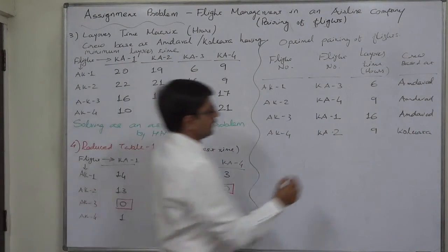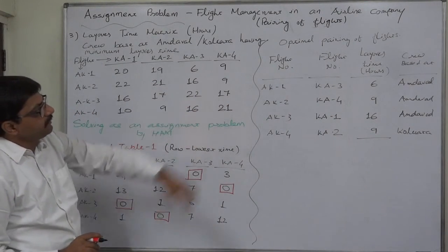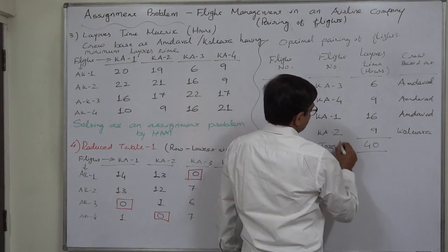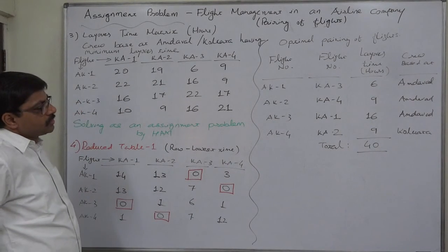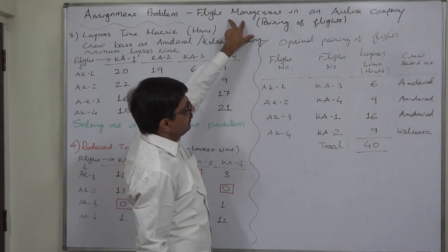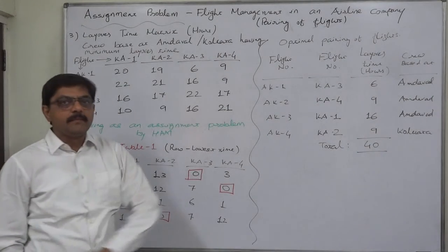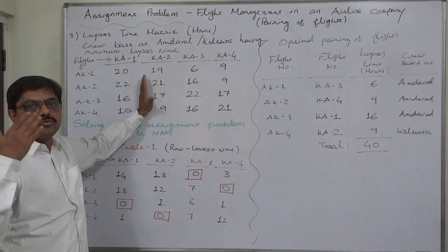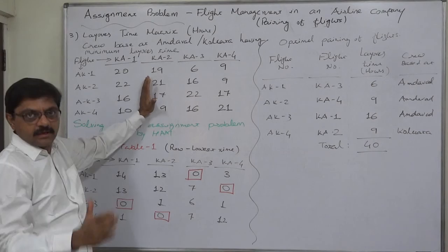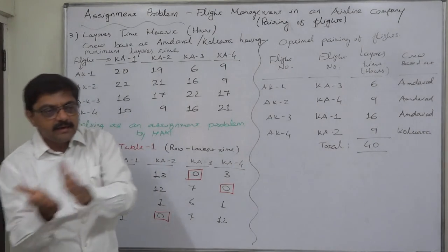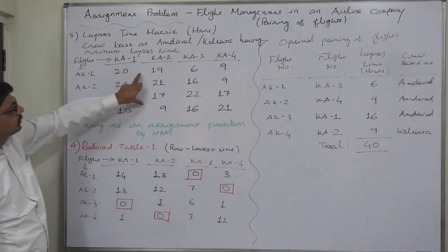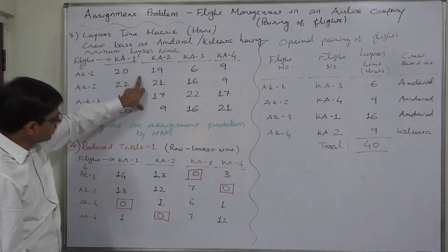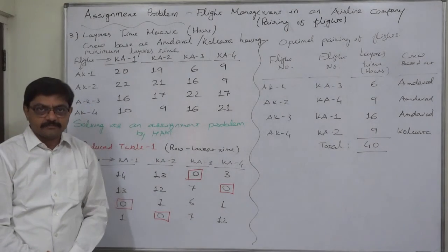Yes, so this is the assignment or rather say optimal pairing of flights and minimum time 25 plus 15, 40. So this is the optimal solution to the original managerial problem. That was the problem of flight management in an airline company operating 4 flights between Amdawar and Kolkata. Before treating this as an assignment problem, we have to go through a specific process of preparing layover matrices. Assuming the crew based at one center and assuming crew based at another center. Then, from these two layover matrices, we select the minimum time and prepare this layover matrix having minimum layover time. And treating this as an assignment problem, we can solve it through HAM. That's it. Thank you very much.